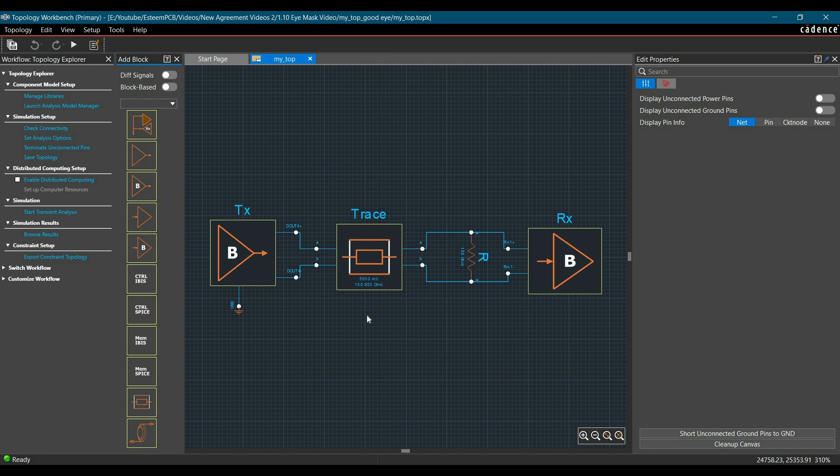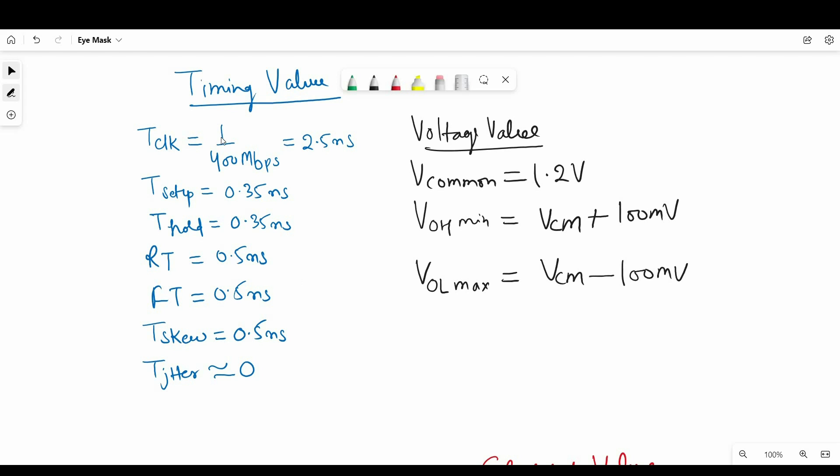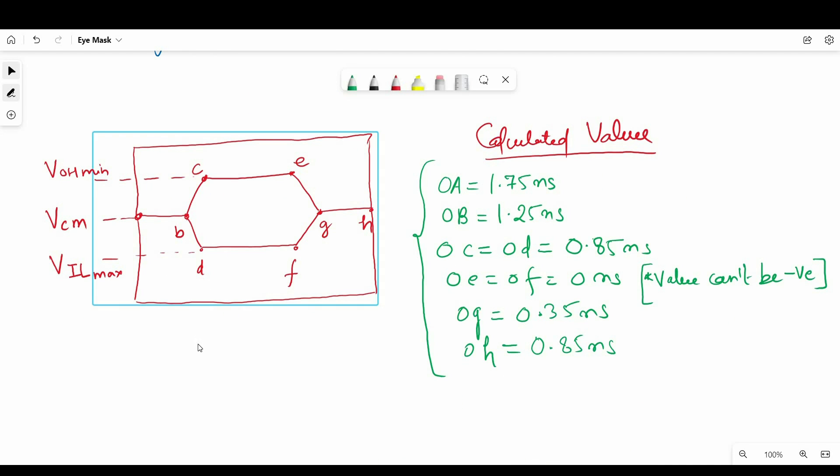So in case of our topology which is a synchronized LVDS signal of 400 Mbps, we have noted down all these values from the manufacturer's datasheet. So in our case Tclock will be 1 upon 400 Mbps which will be 2.5 nanoseconds. Setup and hold time, rise time, fall time, skew and jitter as mentioned on the datasheet we are considering it almost negligible or zero. The voltage values that we should note down from the datasheet is Vcommon which is 1.2V for LVDS because we are following ANSI standard. VOHmin is Vcommon mode plus 100mV and VOL is Vcommon mode minus 100mV. Now when we apply these values on the formulas that we have discussed on previous slide, we got all these points from A to H and in the next step we are going to put these values on Security Topology Explorer's SI viewer and implement eye mask over eye diagram. So let's do that.